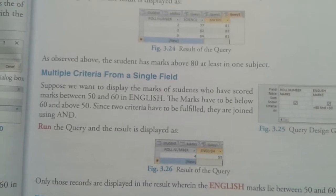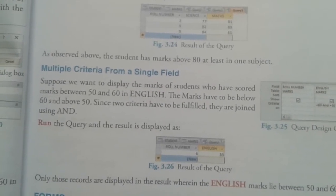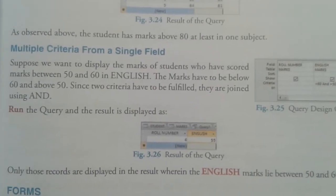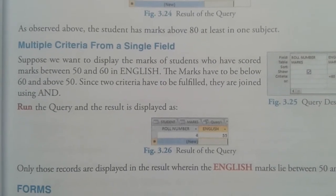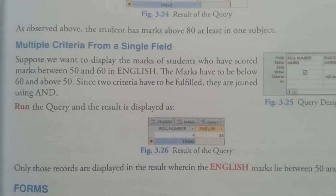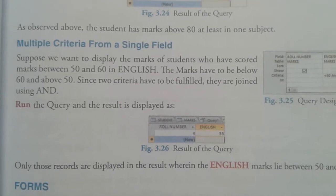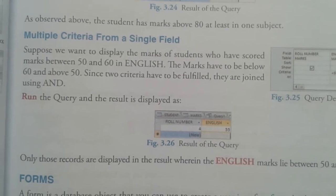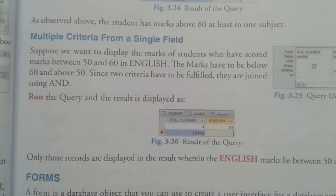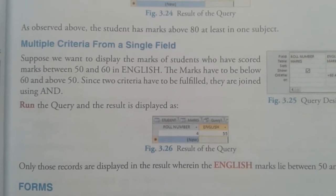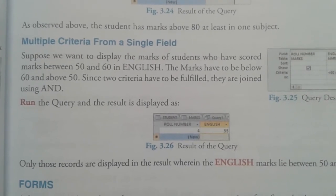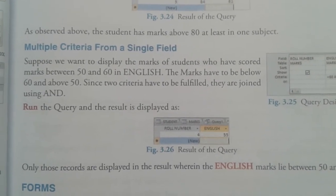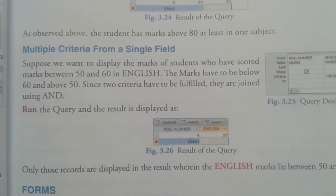A form is a database object used to create a user interface for a database application. Your database application can use forms to set criteria — for example, if you want to get a vote you have to be 18 years old, and your name must be listed in the voter list. These are criteria you have to fulfill — similarly, forms apply conditions in a database.